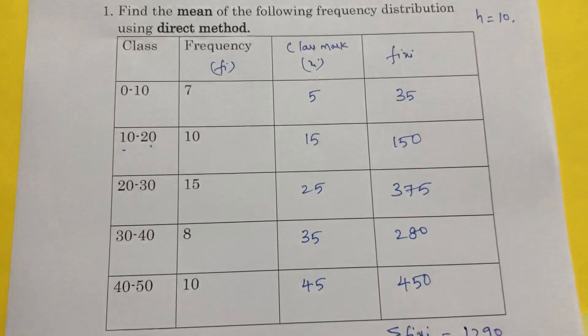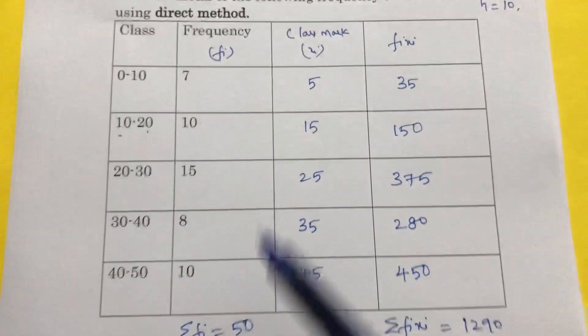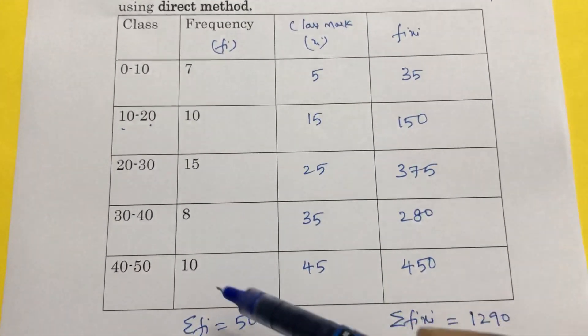Next, if you will add all total frequency values: 7 plus 10 plus 15 plus 8 plus 10 equals 50.